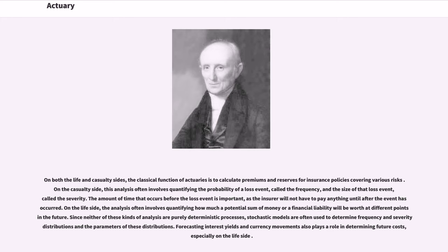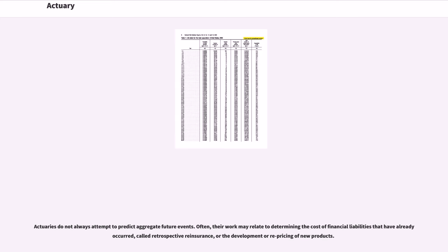Since neither of these kinds of analysis are purely deterministic processes, stochastic models are often used to determine frequency and severity distributions and the parameters of these distributions. Forecasting interest yields and currency movements also plays a role in determining future costs, especially on the life side. Actuaries do not always attempt to predict aggregate future events; often their work may relate to determining the cost of financial liabilities that have already occurred, called retrospective reinsurance, or the development or repricing of new products.